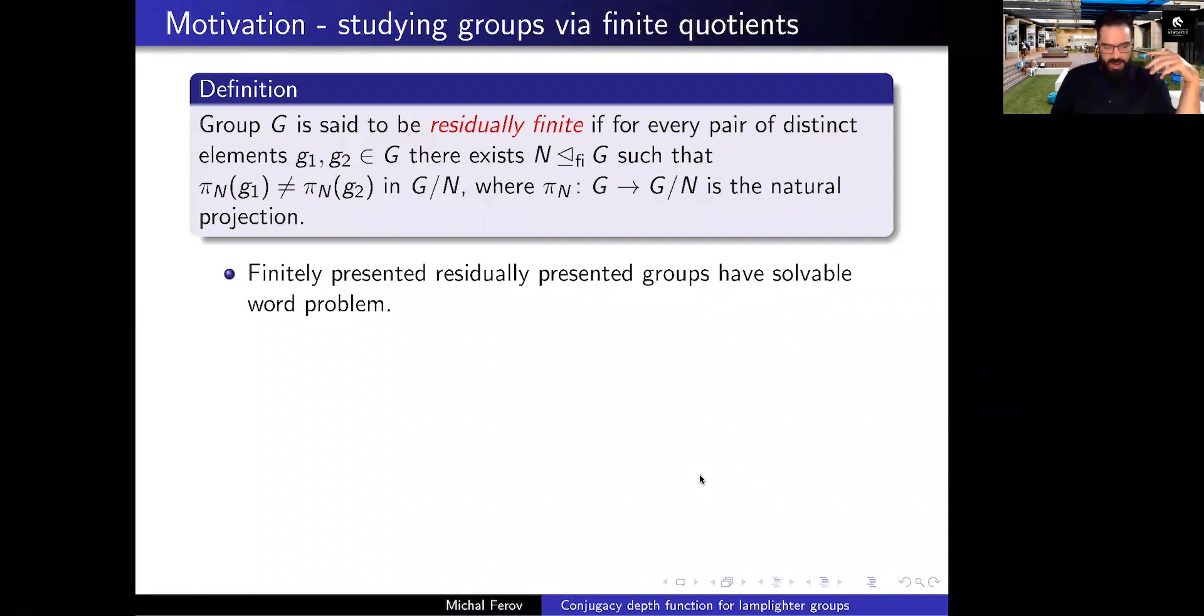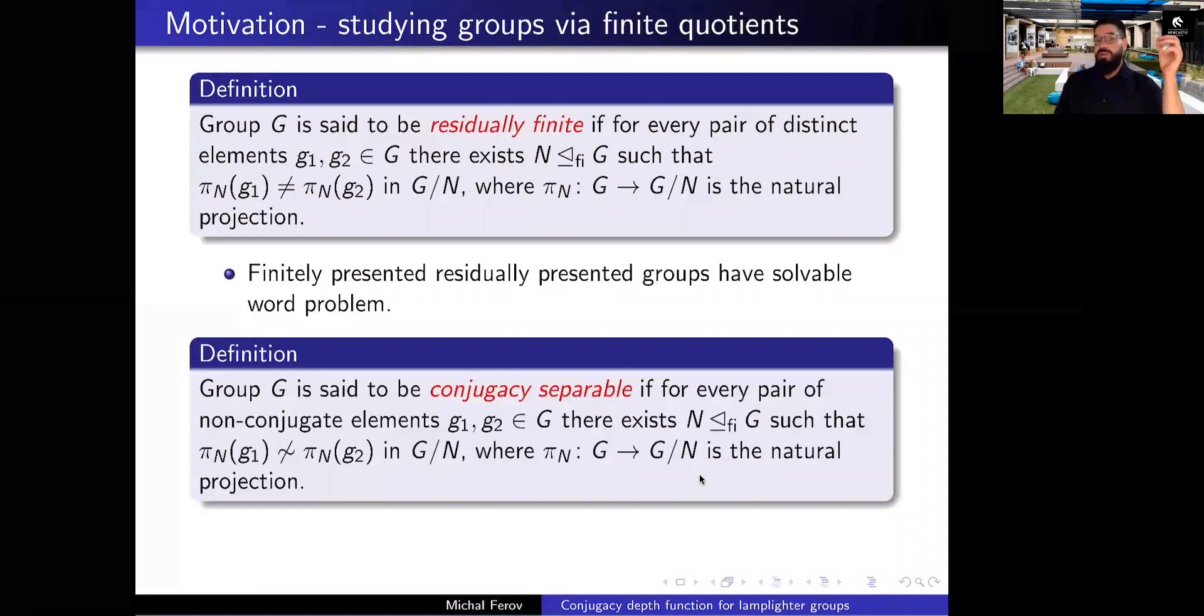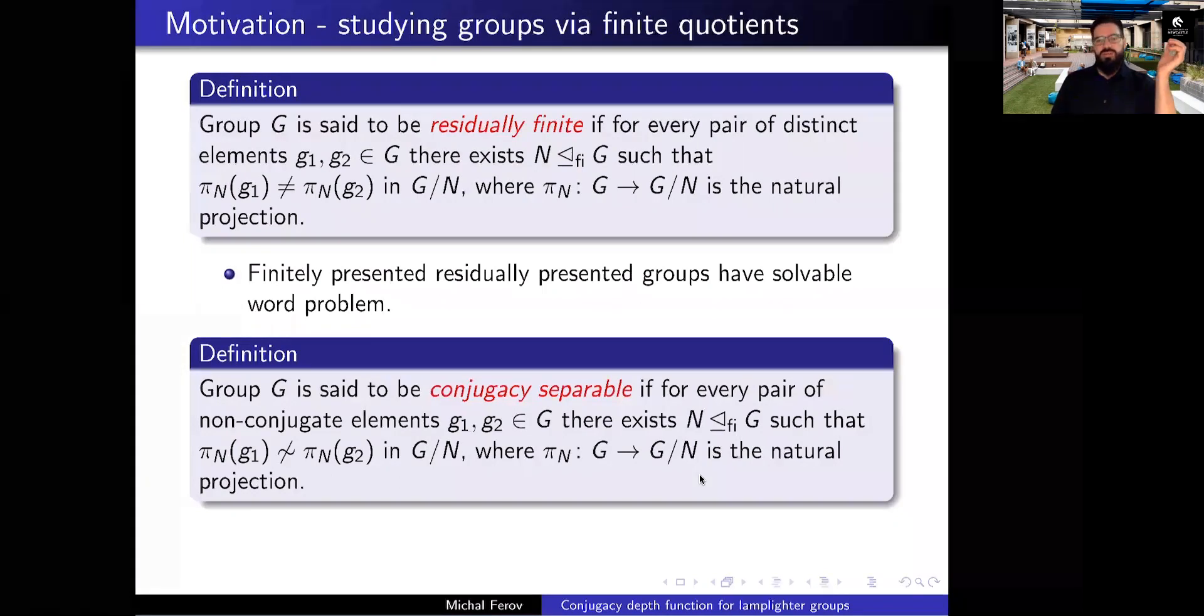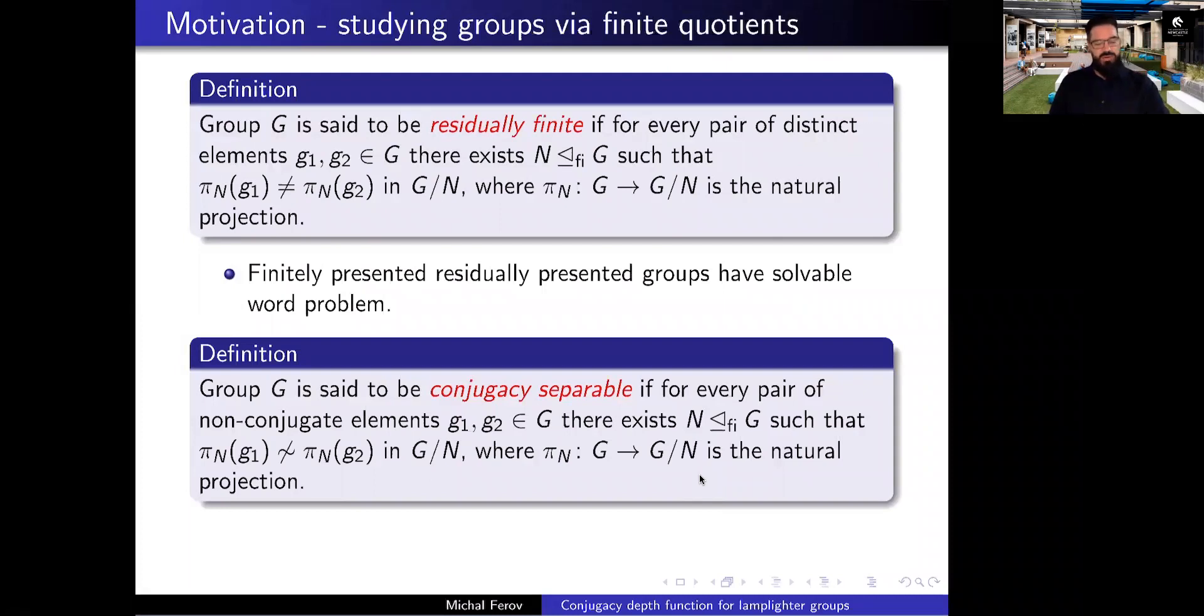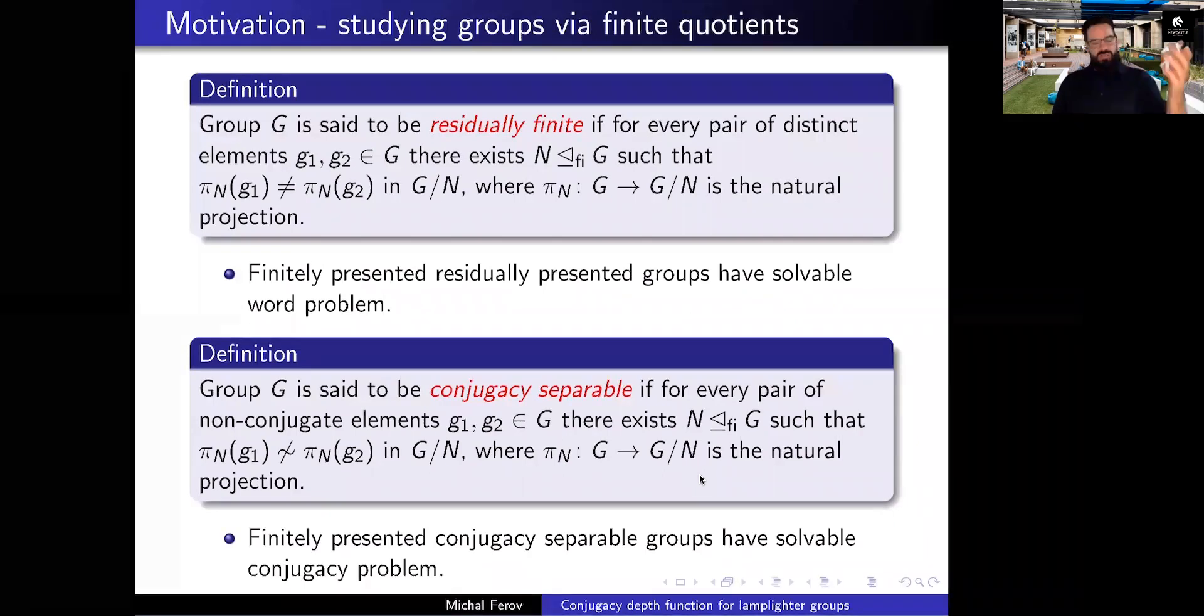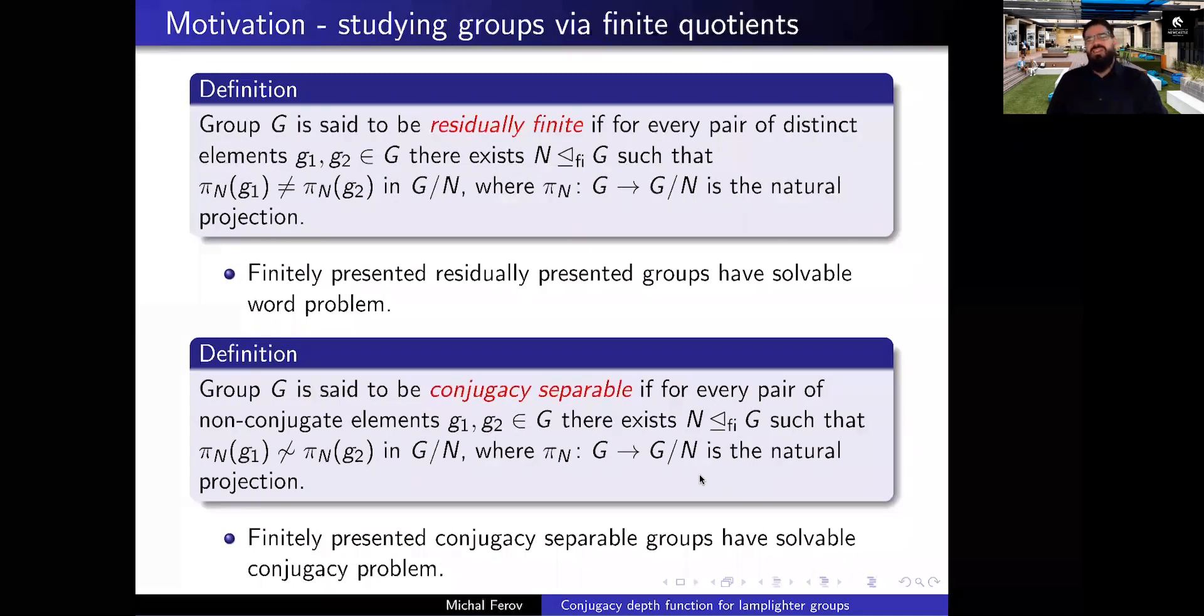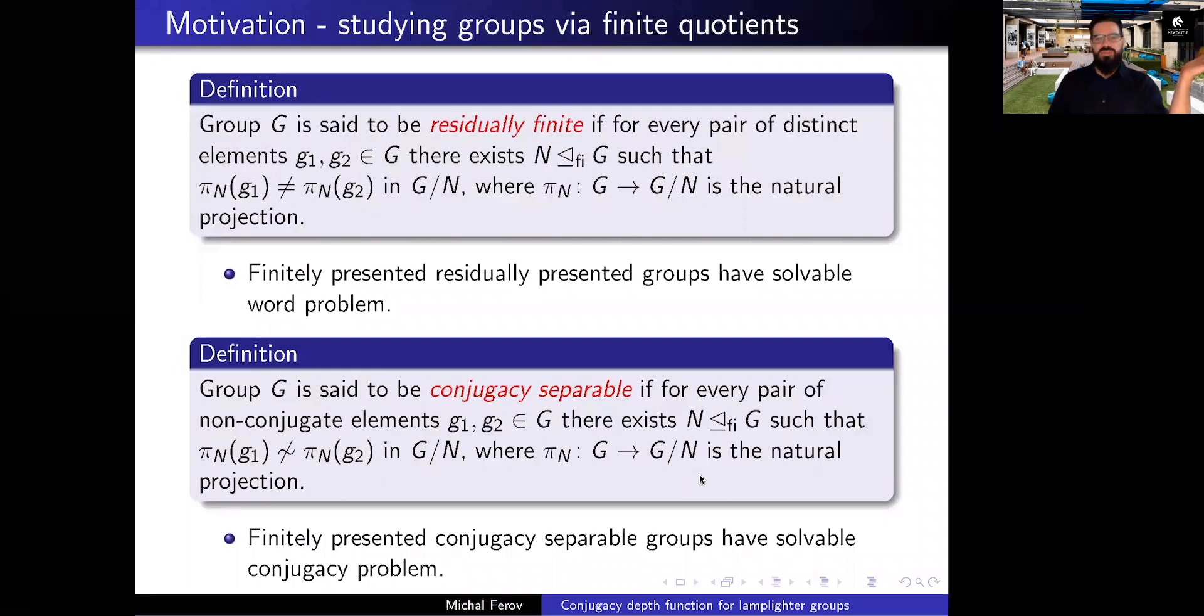I usually, to a large extent, study conjugacy separability. What does that mean? A group is conjugacy separable if whenever you are given two elements of your group that are not conjugate, you're guaranteed that there exists a finite quotient of your group such that the images are again not conjugate. So you could say that you can distinguish conjugacy classes by looking at finite quotients, or if you want to be a bit more fancy, you can say that conjugacy classes are closed in the profinite topology. And again, using this you could describe an algorithm that can solve a conjugacy problem. Again, it's an algorithm that just enumerates all finite quotients of your group, so it's not really something that you want to run.